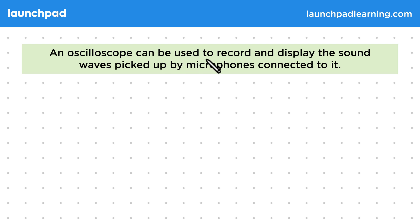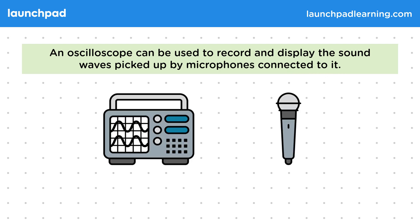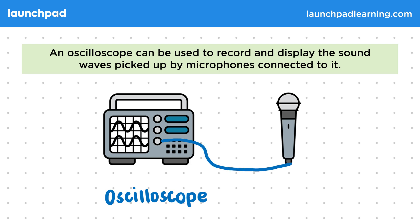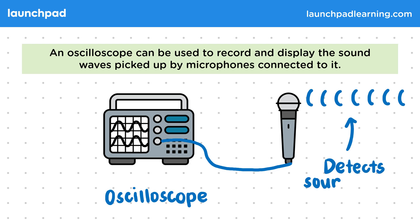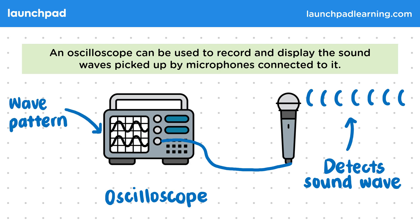An oscilloscope can be used to record and display the sound waves picked up by microphones connected to it. Here's an example of an oscilloscope. We can connect devices like microphones to this. The microphone is then used to detect sound waves and convert them to electrical signals. The oscilloscope takes these signals and uses them to display a wave pattern on its screen.